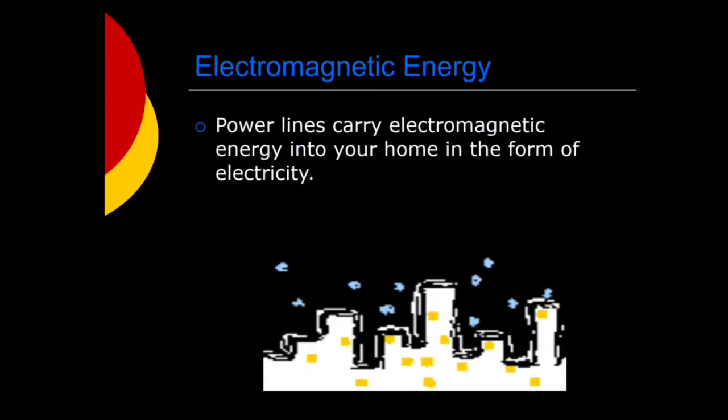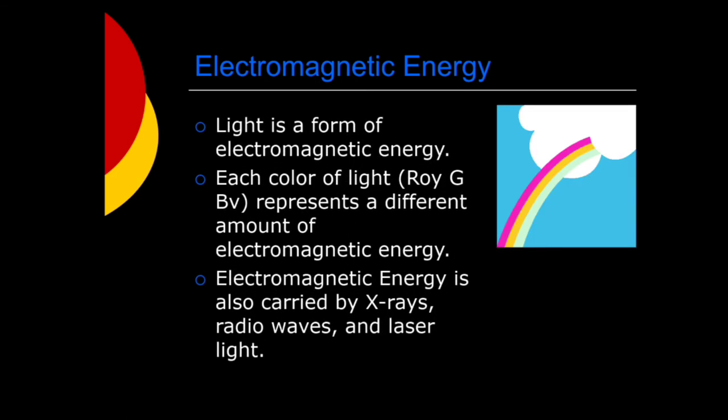Then what is electromagnetic energy? Power lines carry electromagnetic energy into your home in the form of electricity. Light is a form of electromagnetic energy. Each color of light represents a different amount of electromagnetic energy.